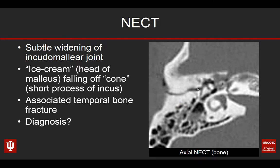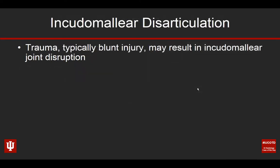So, what's our diagnosis in this case? Our diagnosis is incudomallear disarticulation. This happens in the setting of trauma — typically blunt trauma — but you can see it in blast injury and, on rare occasion, barotrauma. It can result in disruption of that incudomallear joint, presenting with widening of the joint space.